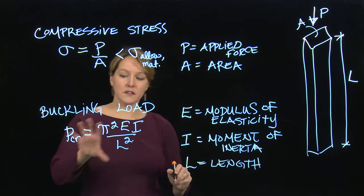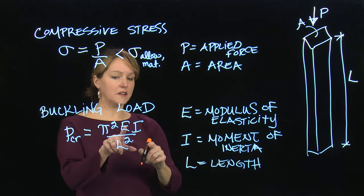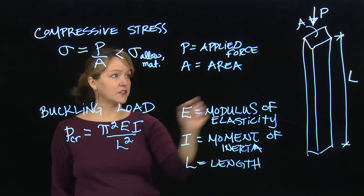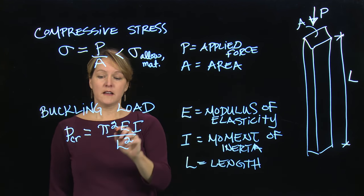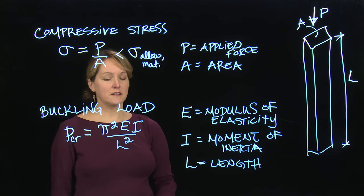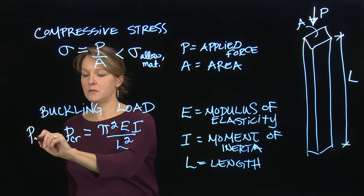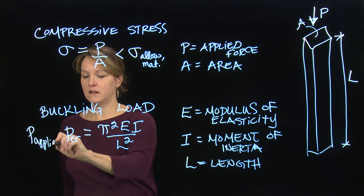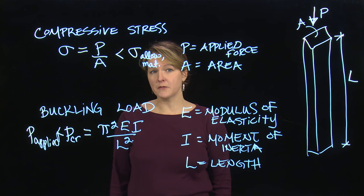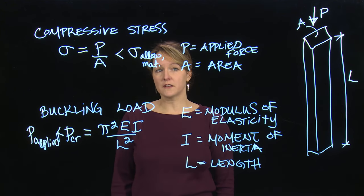So using these equations, or using this critical buckling load, if I know the material, I can look up E. If I know the shape of the cross-section, I can look up the moment of inertia. And I'll typically know the height. I can calculate this critical buckling load. And I'll want to make sure that the applied load is less than this critical buckling load. So you want P applied to be less than that critical buckling load, so that you make sure it doesn't buckle. So those would be the two things we'd look at if we're designing a column.